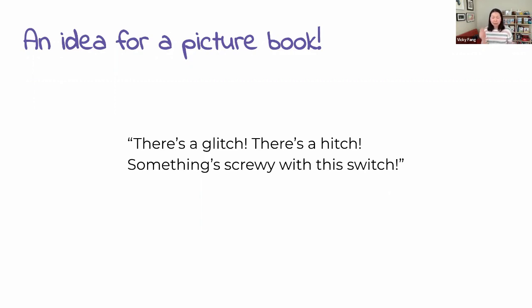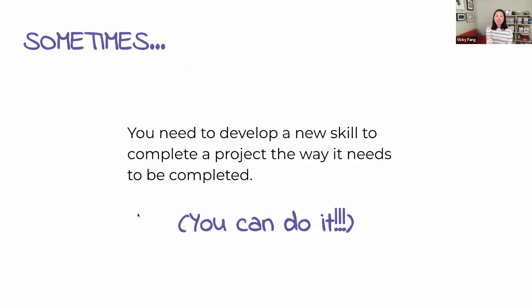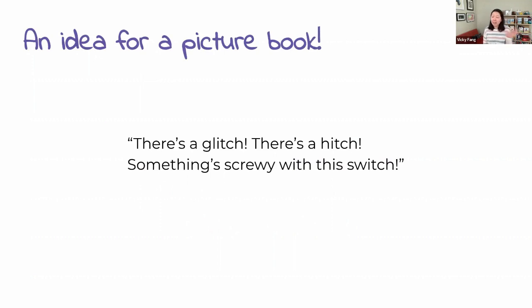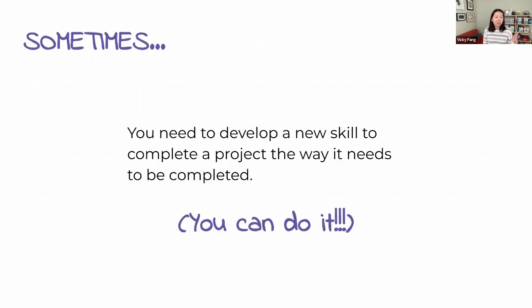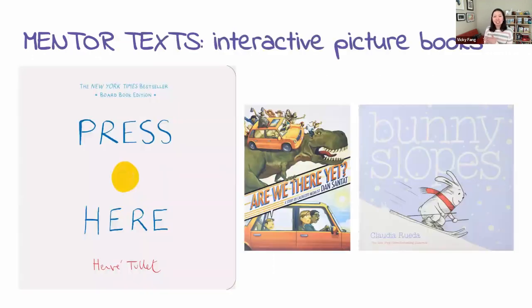My agent suggested, 'I like that — can you do that on every page?' Sometimes you need to develop a new skill to complete a project the way it needs to be. I didn't start off as an illustrator, but now I illustrate and have to learn different ways to meet the project. For this book, I had never written in rhyme before, so I had to learn. I took Rene Latulip's Lyrical Language Lab, worked on rhyming, and worked on this manuscript — it took a long time. With the interactive note from my agent, I studied a lot of interactive picture books, looking at how they work mechanically, and studying those mentor texts. And all of this stayed squarely in the picture book lane.